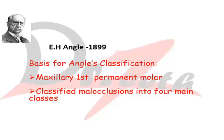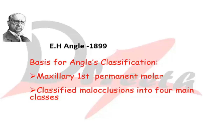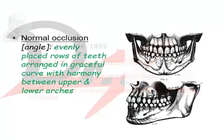Angle coined the term malocclusion to show the different positions of the teeth which are not normal. This is one of the basic and revolutionary classifications in history, which revolutionized the classification system. His classification was based on the position of the maxillary first permanent molar, and he classified malocclusion into four main classes.